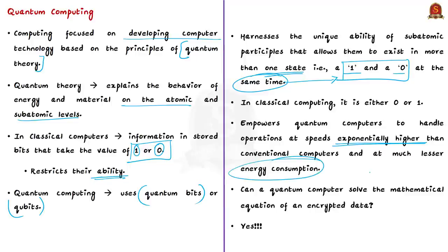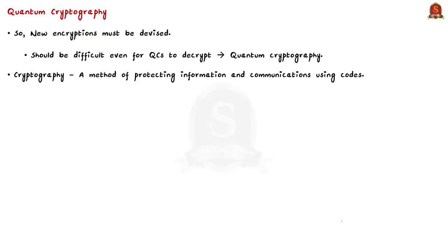Quantum computing harnesses the unique ability of subatomic particles that allows them to exist in more than one state, that is a 1 and a 0 at the same time. In classical computing it is either 0 or 1, but in quantum computing it can be both 1 and 0 at the same time. This empowers quantum computers to handle operations at speeds exponentially higher than conventional computers and at much lesser energy consumption. Can a quantum computer solve the mathematical equation of an encrypted data? The answer is yes for quantum computer. With the help of quantum computer, regular encryptions can be decrypted, so our transaction will not be safe.